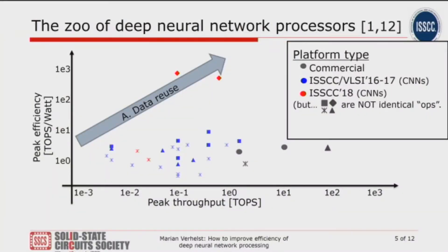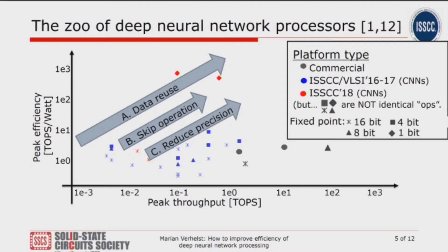Each of these devices tries to push throughput and efficiency with three important pillars. First, they all try to reuse data as much as possible. Second, they try to skip operations that are not really necessary. Third, they try to reduce the computational precision at which they do their multiply-accumulate operations. Some implementations compute in floating point, many at fixed point — the crosses are 16-bit, the triangles are 8-bit, and some even compute at 4-bit or 1-bit precision. This is why not all operations in this graph are the same.